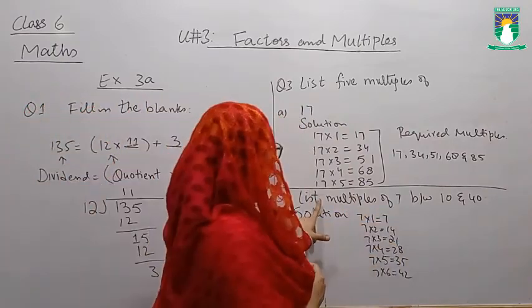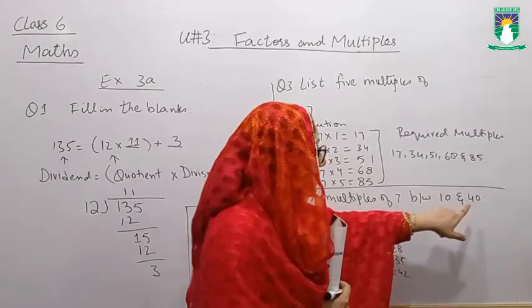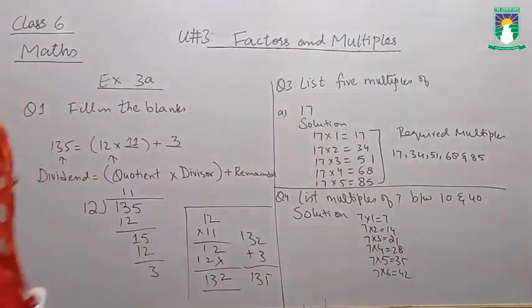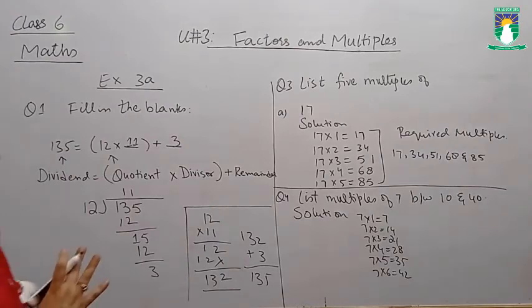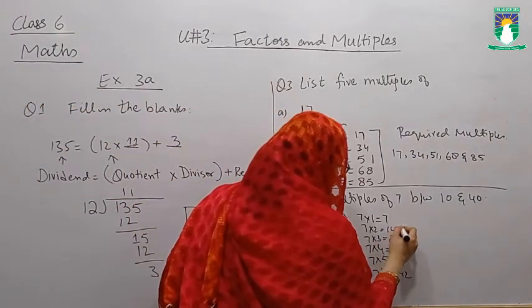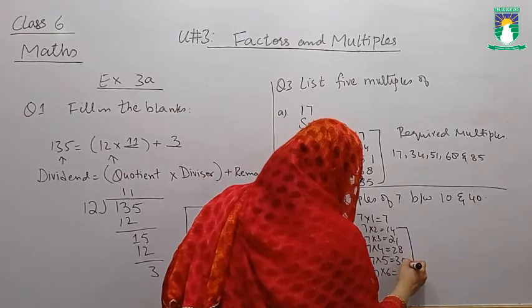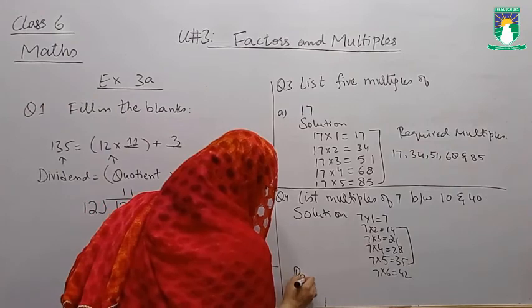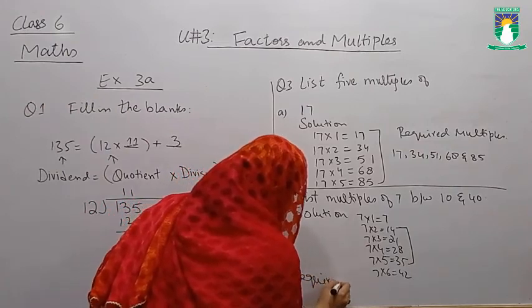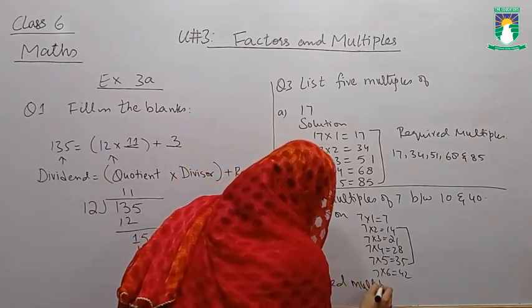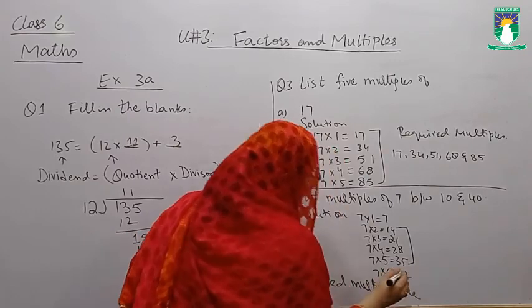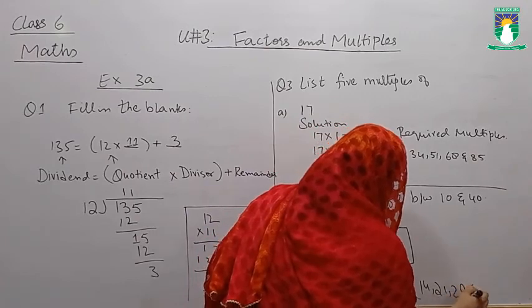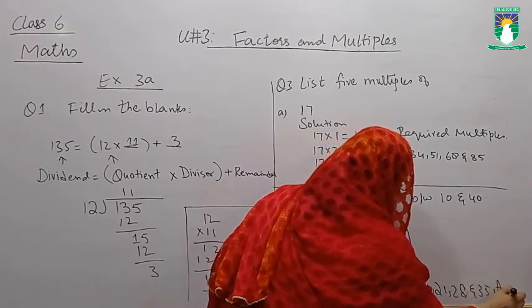Now see, list the multiples of 7 between 10 and 40. This means greater than 10 and less than 40. So the required multiples are: 14, 21, 28, and 35.